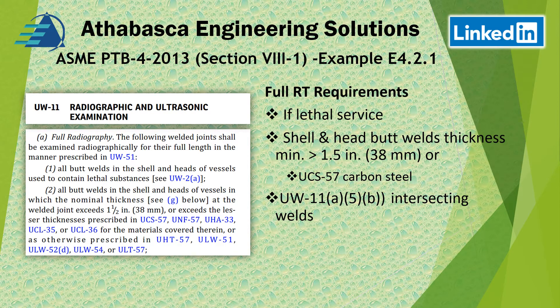There are quite a few clauses. The essential ones are: you need to do full RT if you're in a lethal service situation, or if your shell-to-head butt weld thickness is greater than 1.5 inches. There are also some clauses within UCS-57 that we'll go over. Additionally, UW-11 covers intersecting welds — if you have a category A and a category B weld that intersect, there are specific rules to follow.